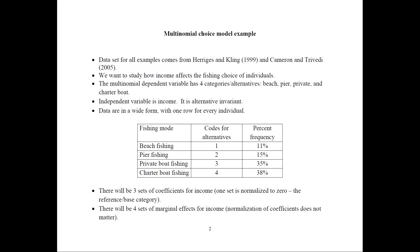The independent variable would be income. Notice that it is alternative invariant, which means every individual has their own income regardless of which alternative they pick for fishing. The data would be in wide form, which means one row for every individual. The codes for the alternatives would be 1, 2, 3, and 4, but the numbers don't mean anything. The percent frequency would be 11, 15, 35, and 38 — so 11% of the people picked beach fishing, 38% charter boat fishing, and so on.